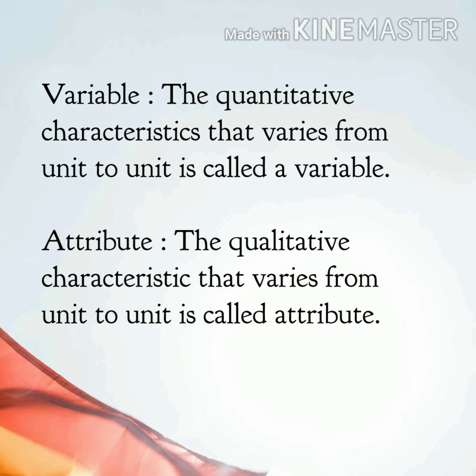Now in the next slide, I am going to discuss what is variable and what is attribute. As you know, research is basically two types: one is quantitative and another is qualitative. In a population, some characteristics remain the same for all units, and some others vary from unit to unit. The quantitative characteristic that varies from unit to unit is called a variable, and the qualitative characteristic that varies from unit to unit is called an attribute. Examples of attribute are gender, race, occupation, etc. The attribute cannot be changed or manipulated by the researcher, as they are an inherent part of a person or object.